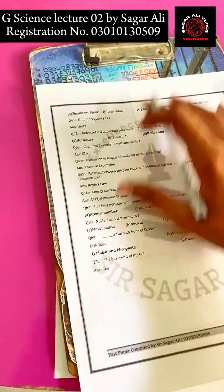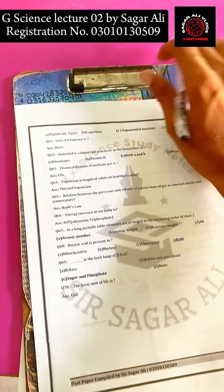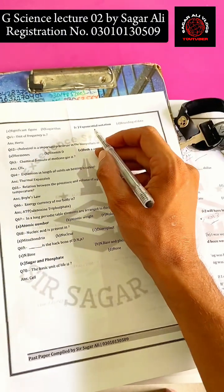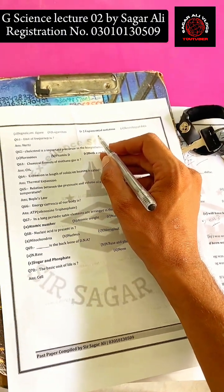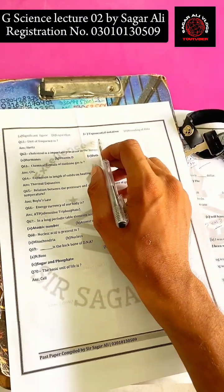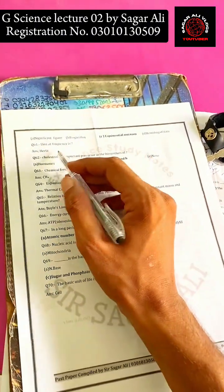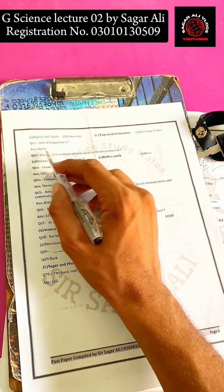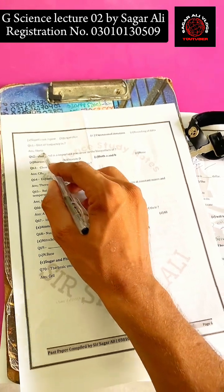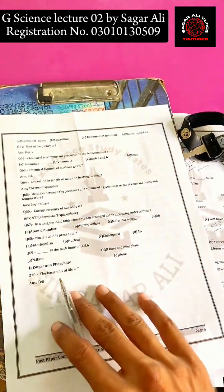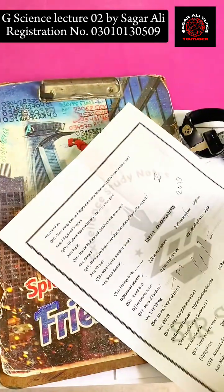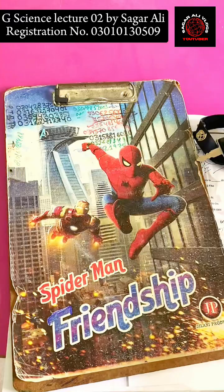Large and small quantities are expressed using exponential signs or exponential notation. The unit of frequency is Hertz, as you have studied in basics.